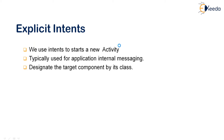Explicit intents are a way to start a new activity. As we already know, an intent is a mechanism to send a message — a description of an action to be performed. Explicit intents are meant for internal application messaging, meaning calling an activity of the same application. We provide the designated target component by its class name in the intent constructor.